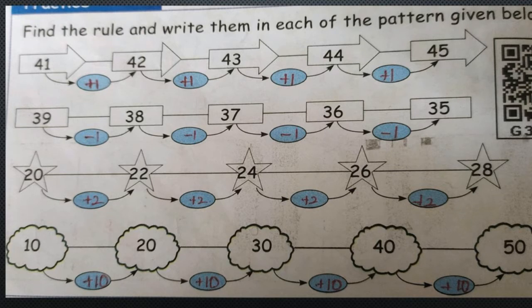Now we will see the third sum: 20, 22, 24, 26, and 28. It is a growing pattern — it grows by 2. So plus 2: 20 plus 2 is 22, 22 plus 2 is 24, 24 plus 2 is 26, and 26 plus 2 is 28.